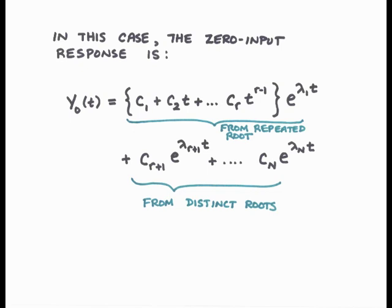The solutions for the distinct roots will be the same as before. The general solution to the zero input problem is y0 of t as the sum of two terms: one associated with all the repeated roots, and one associated with the distinct roots. For the distinct roots we have c sub r+1 e to the lambda r+1 t through cn e to the lambda n t. For the real repeated roots, we multiply e to the lambda 1 t by a polynomial in t with coefficients c1 through cr and powers of t from t to the zero through t to the r minus 1. If a problem had two different sets of repeated roots, we would get two such polynomial terms.